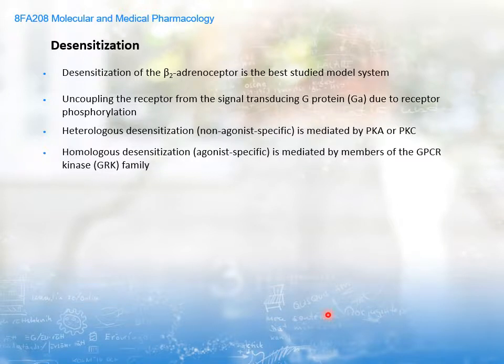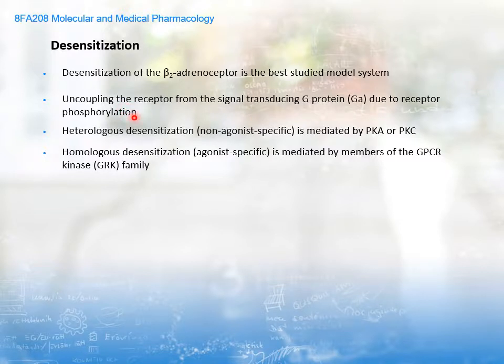Talking about desensitization — the first of these signal-turning pathways — I'll describe the desensitization of the beta-2 adrenergic receptor, which is the best-studied model system. In this case, desensitization results from an uncoupling of the receptor from the signal-transducing G protein, and this occurs because of receptor phosphorylation. Protein phosphorylation is one of the main mechanisms to activate and deactivate proteins, and GPCRs are no exception. When a GPCR is phosphorylated, it has reduced sensitivity to further signaling. This phosphorylation takes the form of either heterologous or homologous desensitization, depending on which kinase carries it out.